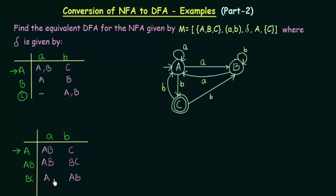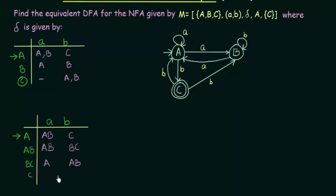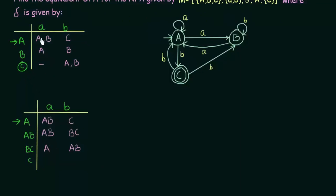The remaining state we have not discussed is state C. In state C, when it gets input A it goes nowhere. But in a DFA we cannot leave a state without a transition — we have to mention where it goes. Since the NFA has φ here, φ in a DFA is equivalent to a dead state. So I will make a new state D as the dead state. And C on getting input B goes to both A and B, so we send it to the already-created state AB.